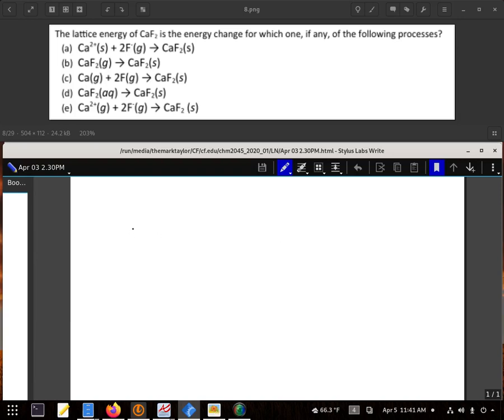It's either going to have the calcium fluoride as the reactant or it's going to have it as the product. Either way is actually found in the lattice energy equation. If you look, every single one of these has calcium fluoride as a product, so that's the one we're going to be looking for.